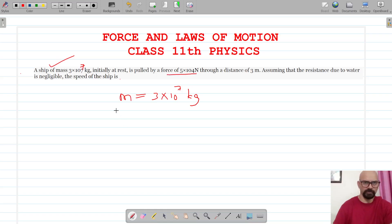It is pulled by a force of 5×10^4 Newton through a distance of 3 meters. Assuming that the resistance due to water is negligible, we have to calculate the speed of the ship.